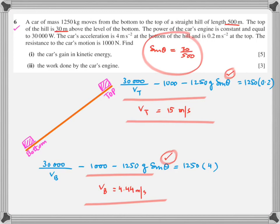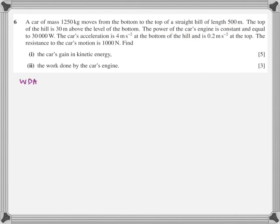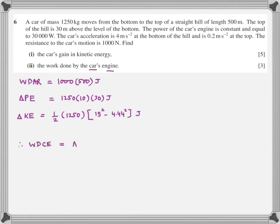Now for the second part, that is pretty straightforward. The tricky part was the first one. Work done by the engine is the same three things added together. Work done against resistance: that's 1000 × 500. Change in potential: MGH - I have H, I can apply that. Change in kinetic energy: ½MV², which is 15² - 4.44². Then you write everything in this equation. Work done by the car engine equals change in potential (positive), change in kinetic (positive), work done against resistance (always positive). Add them up and then you get the answer.